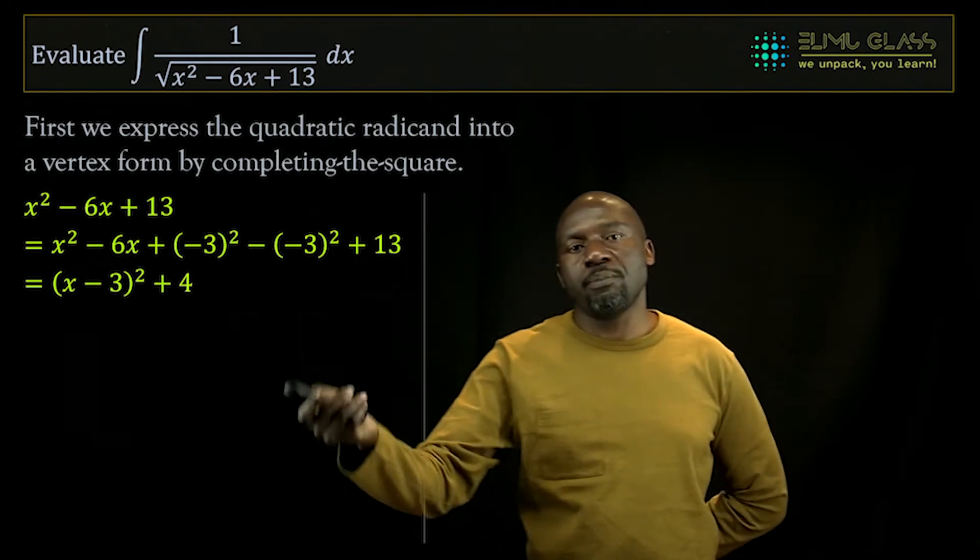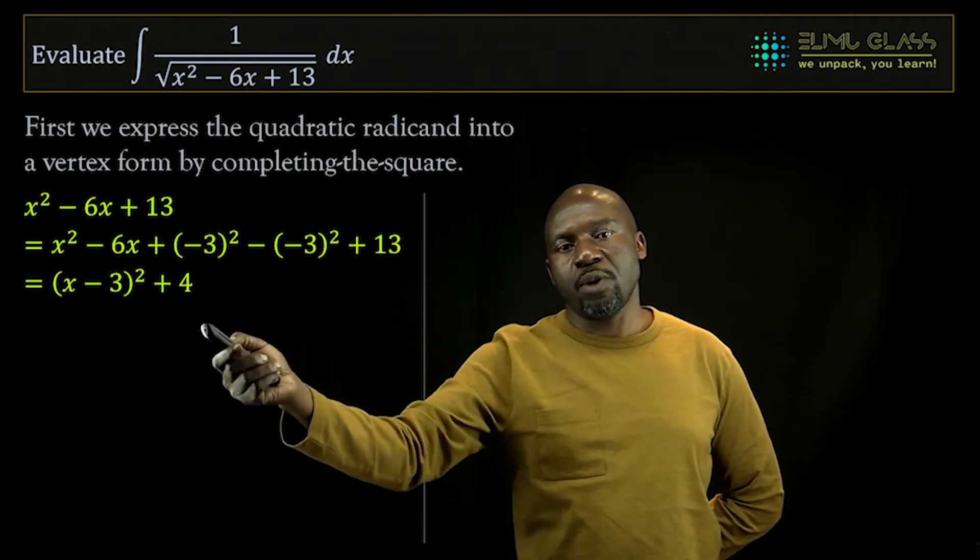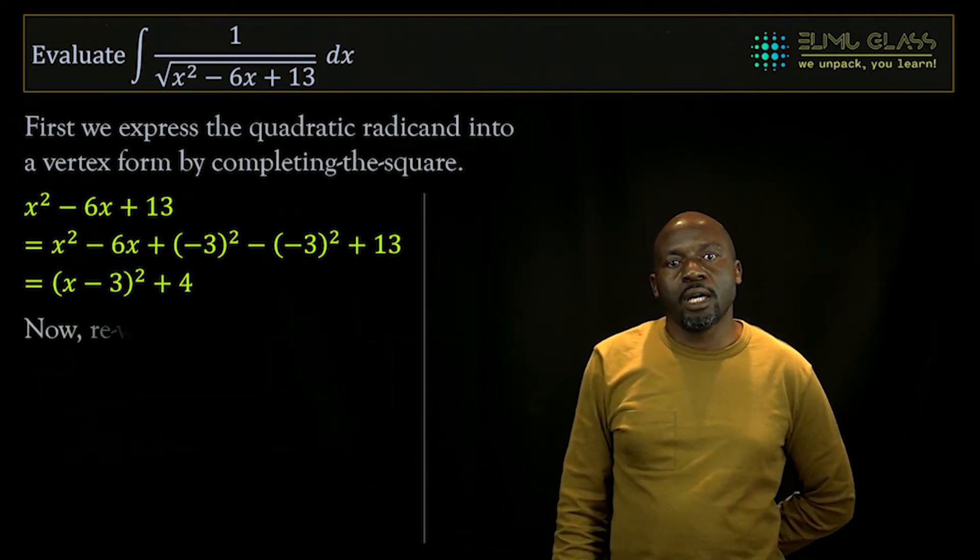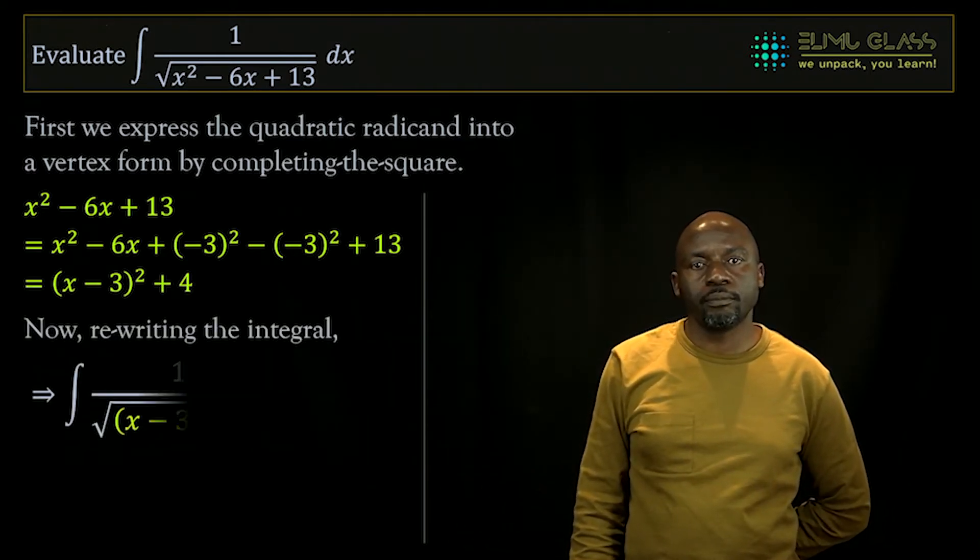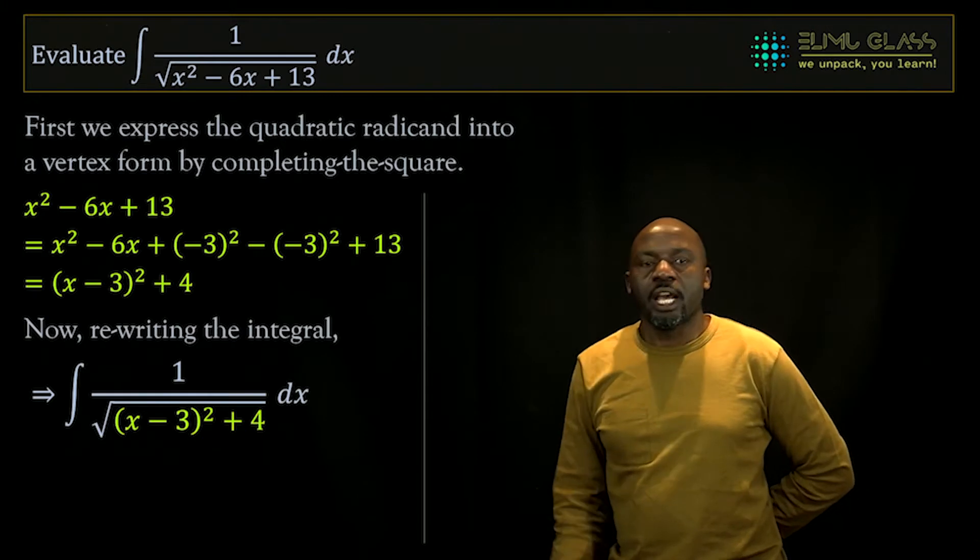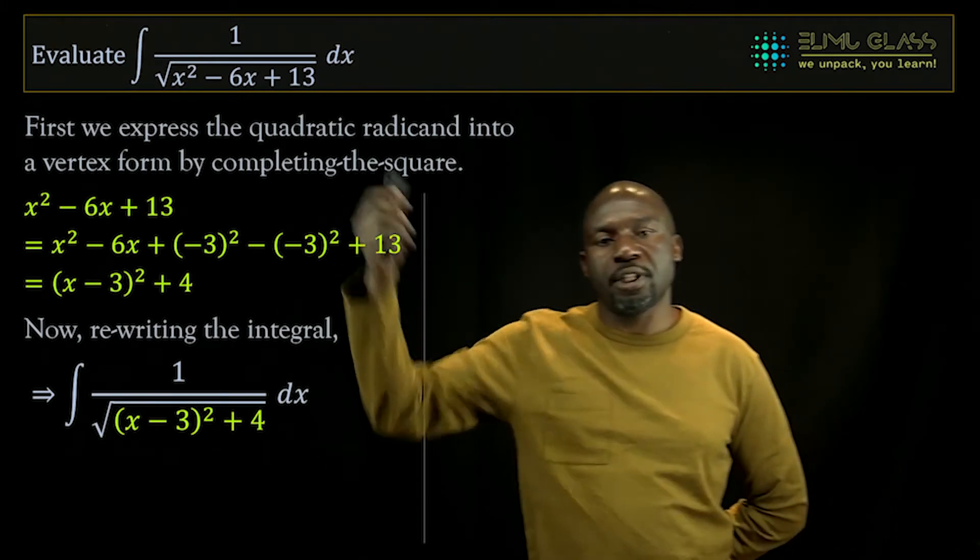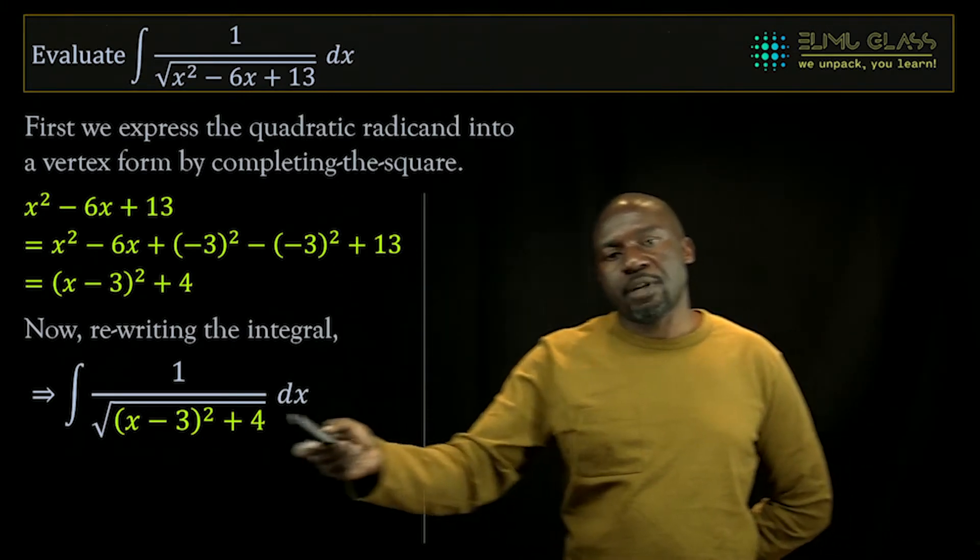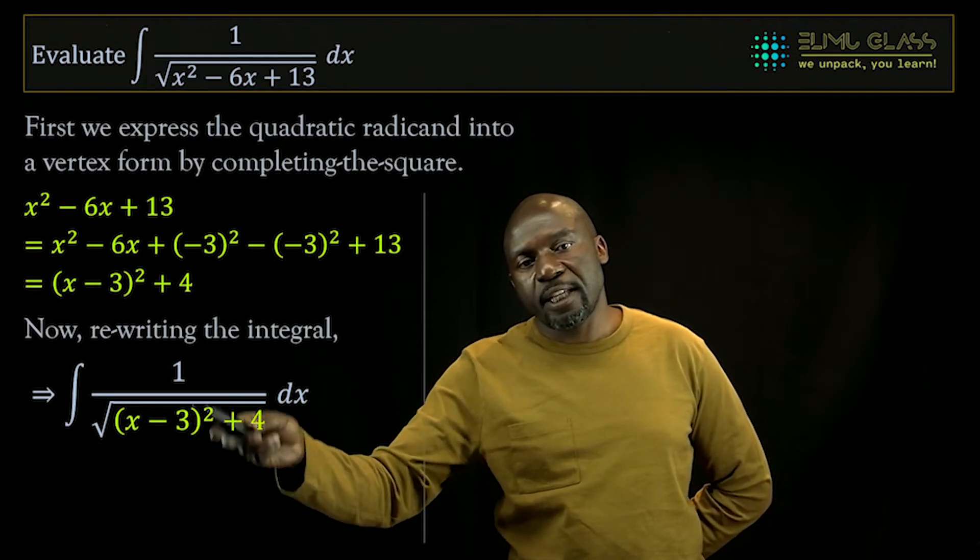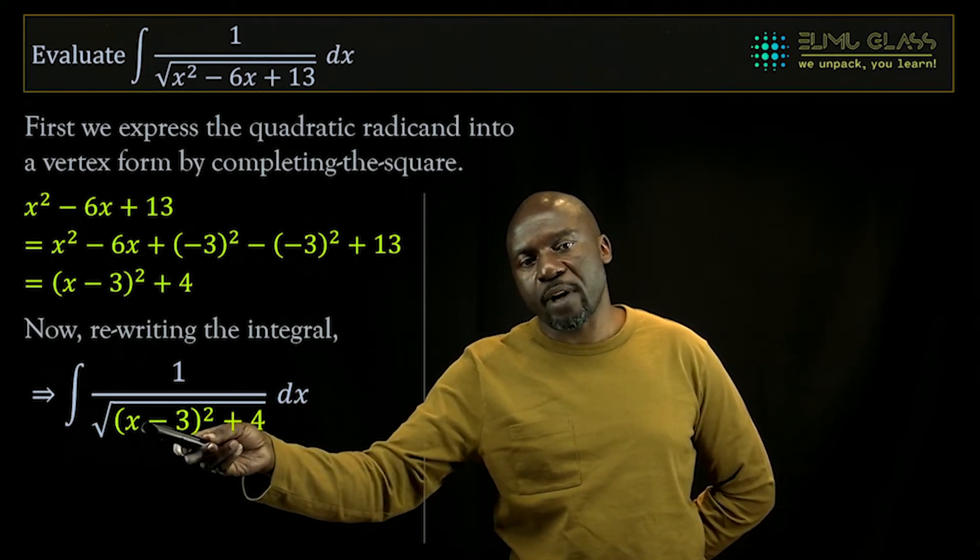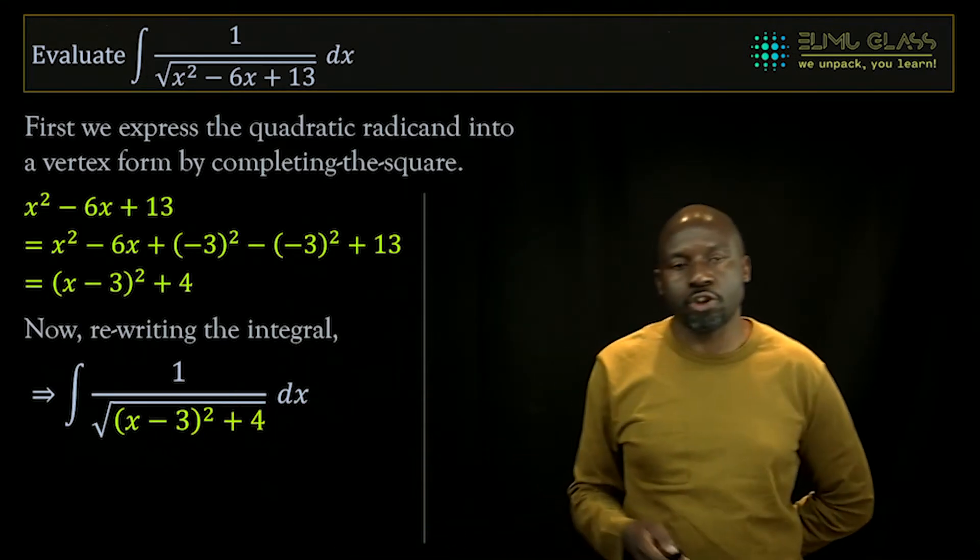So now we are going to replace that expression with this form, the vertex form, and that's what we have. And now it looks like the expression that we've solved earlier, except now we have x minus 3 squared instead of just x squared. It doesn't matter, the same substitution works.